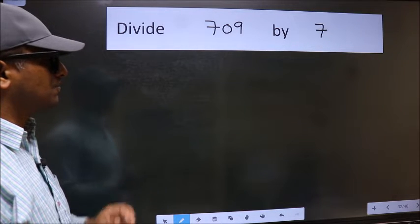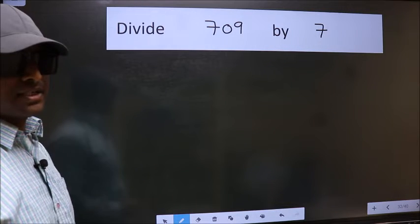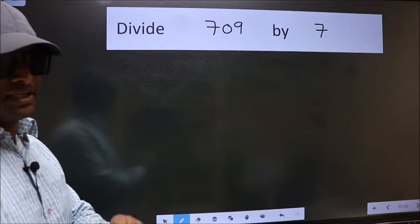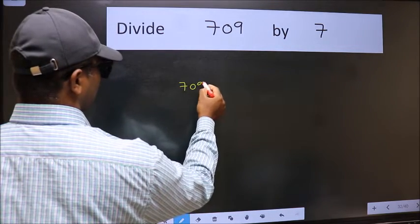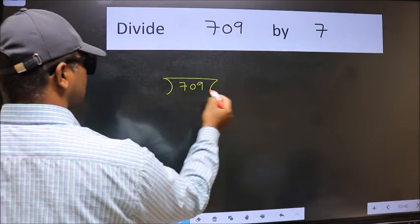Divide 709 by 7. To do this division, we should frame it this way: 709 here and 7 here.